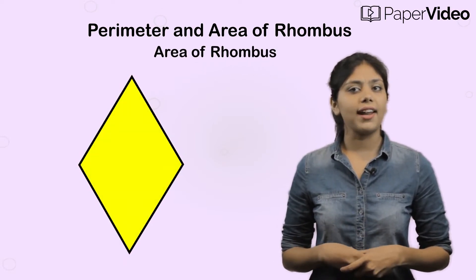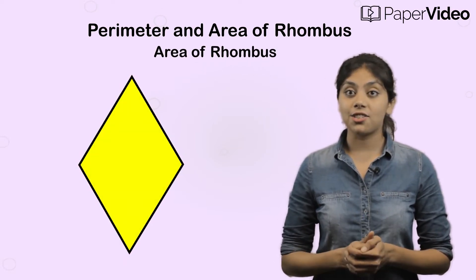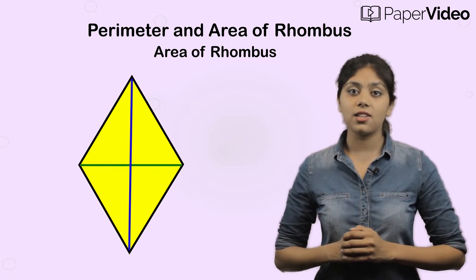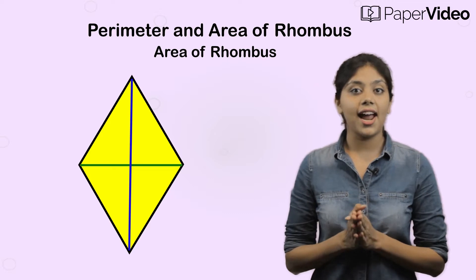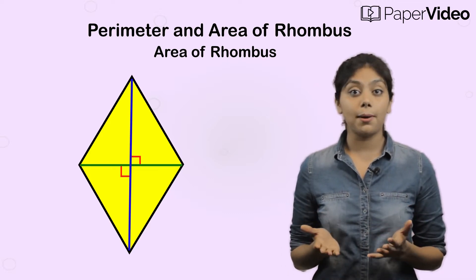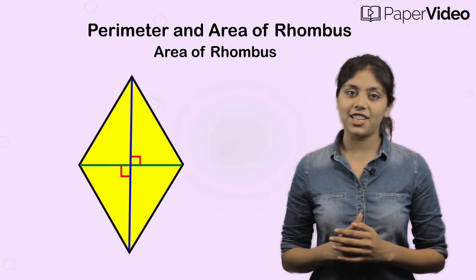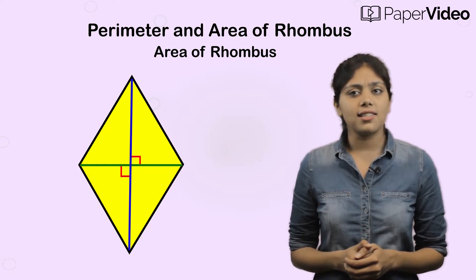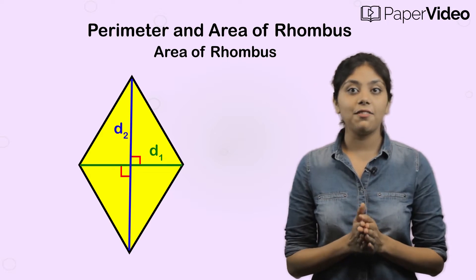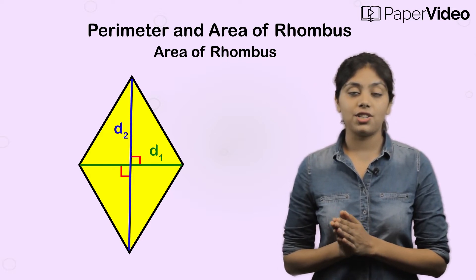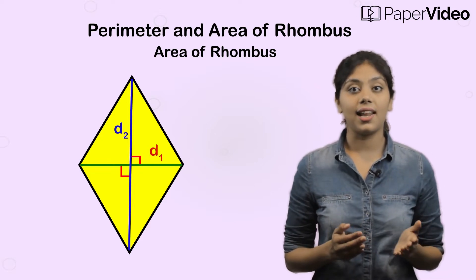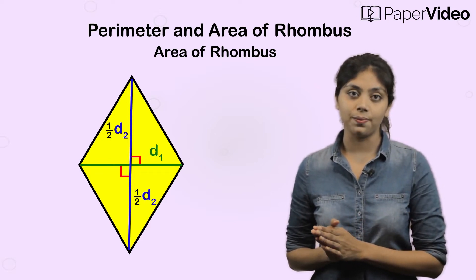How will you find the area of a rhombus? Let us draw both the diagonals of the rhombus. We know that diagonals of a rhombus bisect each other at right angles, which means that both the diagonals are perpendicular to each other. Let us mark this diagonal as D1 and this diagonal as D2. Then we have a rhombus which is a combination of two congruent isosceles triangles whose base is D1 and height is half of D2.